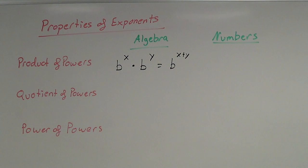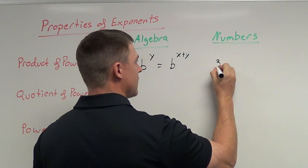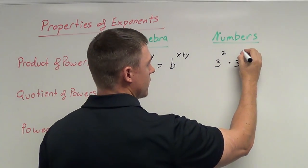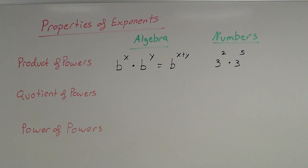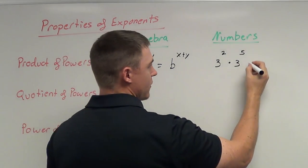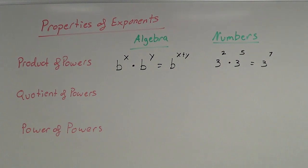Let's put some numbers in. If I have 3 to the second power times 3 to the fifth power, these are like bases, so the rule says I take the exponents and add them together. This gives me 3 to the seventh power. The base doesn't change — only the exponent changes. You could continue to evaluate 3 to the seventh, but I'm just showing the basics here.